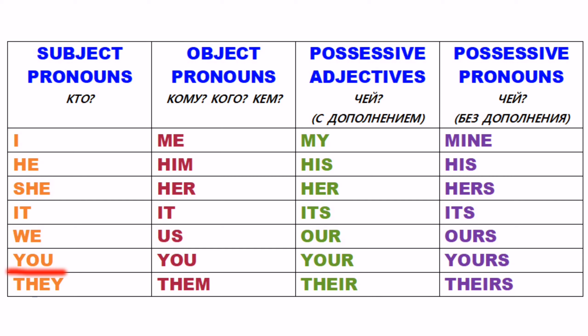Вторая колонка называется object pronouns — объектное местоимение. Это форма местоимения, отвечающая на вопрос «кому», «кого», «кем». Например, чтобы сказать «мне», «меня», «мной» — это всё одна форма: me. Форма me захватывает все наши остальные формы этого слова. He — чтобы сказать «ему», «его», «им» — это будет him. Чтобы сказать «её» или «ей», «ею» — это будет her. На все эти вопросы отвечает слово her.